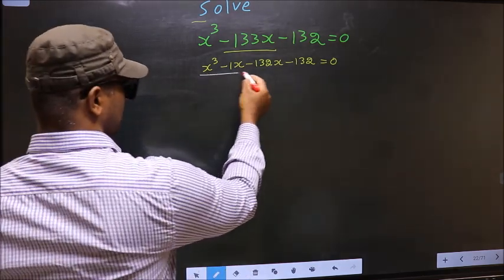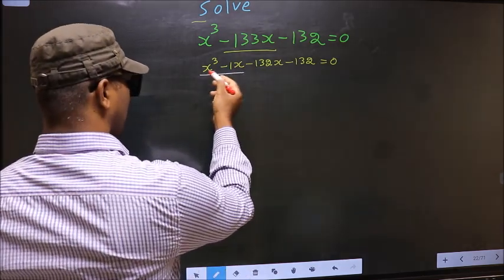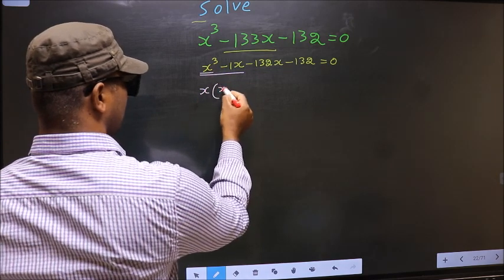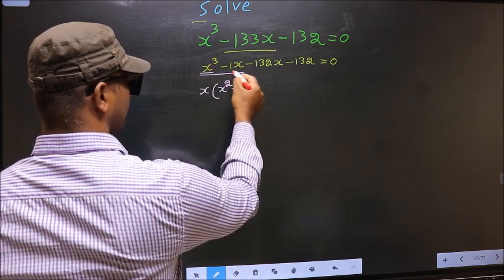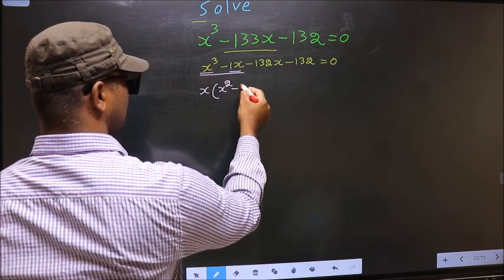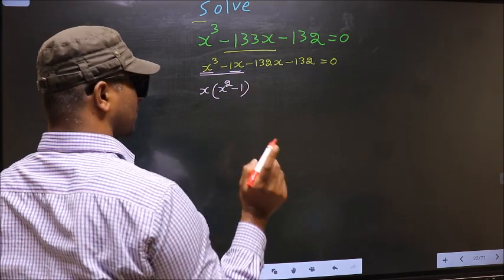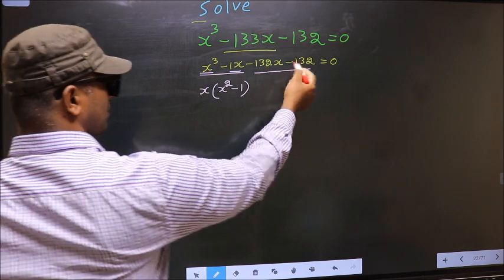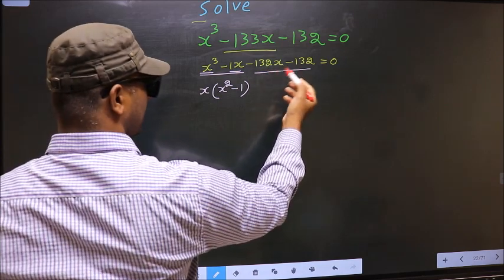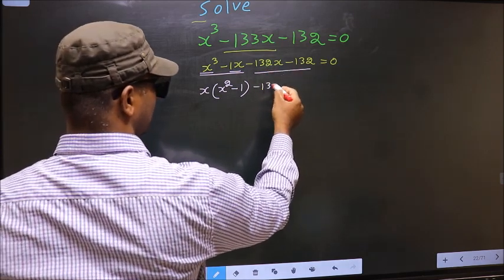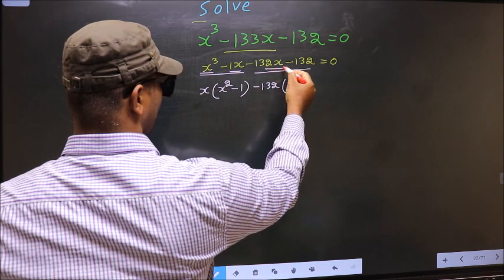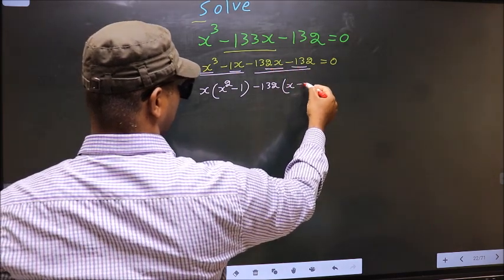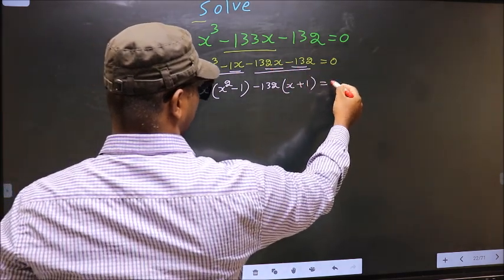Now, from the first two terms, what can be taken out as common? x. So here you get x squared minus 1. In the same way, from the next two terms, what can be taken out as common? Minus 132. Here you get x plus 1, equal to 0.